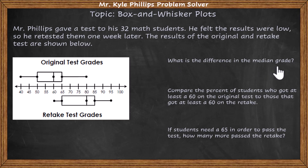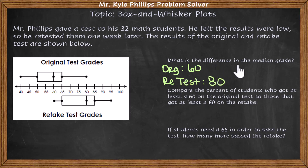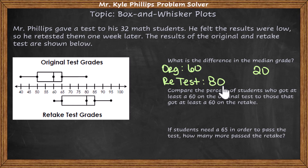Our first question is: what's the difference in the median grade? The median is always going to be that vertical line in the middle of the box. With the original test, they had a median of 60, while the retest had a median of 80, so the difference is 20. That's huge — if 50% got a 60 or higher on the original, and now 50% got an 80 or higher, that's a drastic improvement. We can really tell that the students needed to retest.